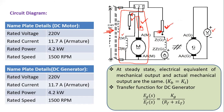Slowly vary the generator field rheostat and check the generated EMF. As we increase the generator field current, the field flux increases, and automatically the generated EMF increases. Slowly increase up to the rated value of 221 V, varying the field current such that the voltmeter shows approximately rated voltage. Observe how the generated EMF increases across the armature.